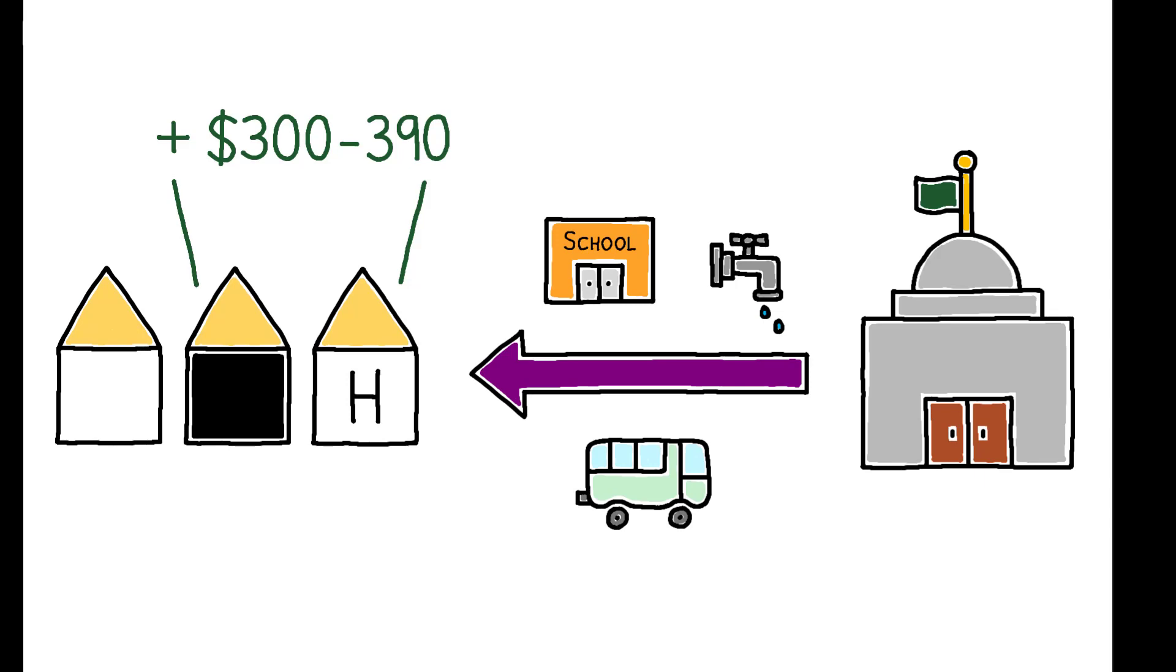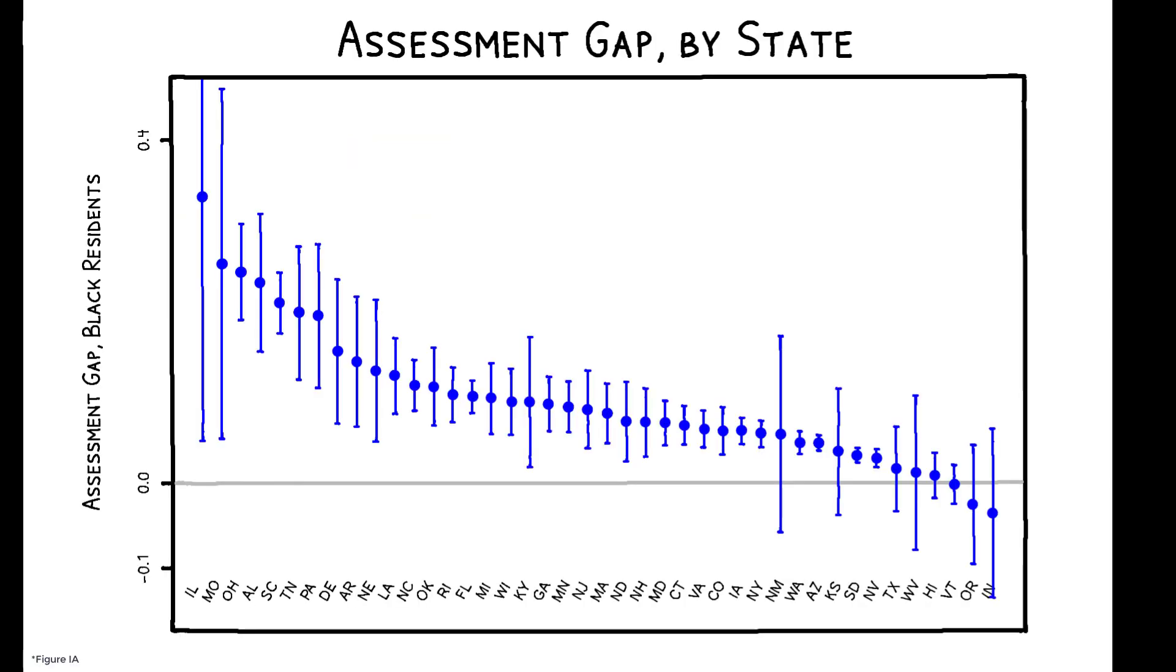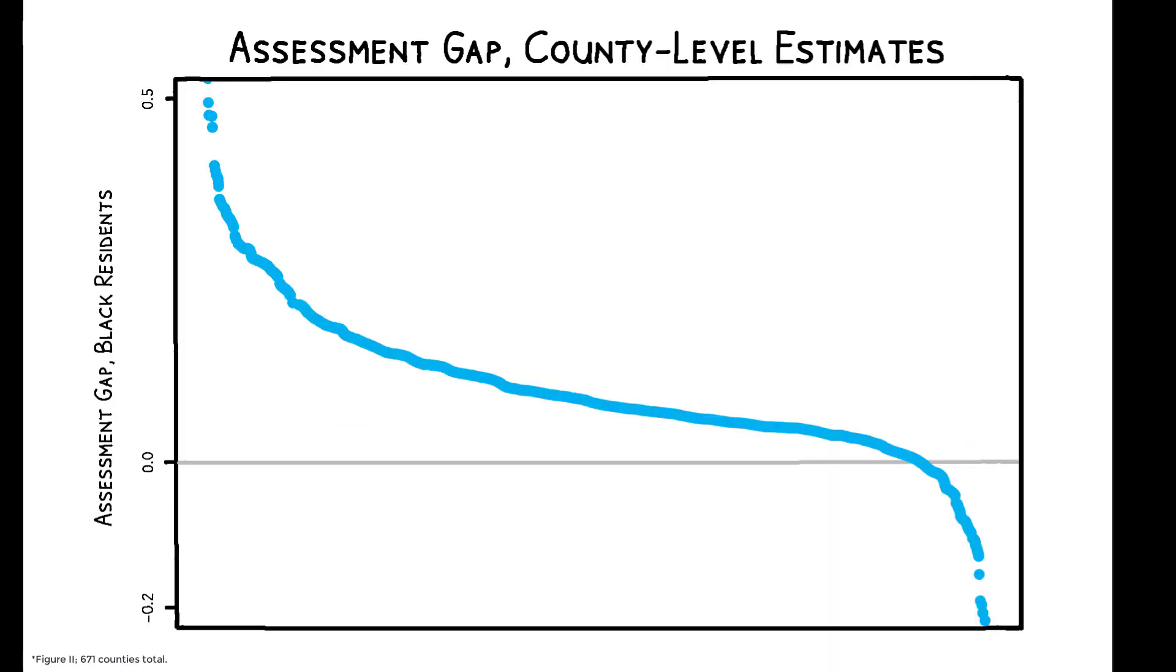Importantly, these findings are not driven by a few isolated cases. Assessment gaps are positive and strongly statistically significant in most states, and county-level estimates reveal that the average Black homeowner in a county at the 90th percentile of the assessment gap distribution pays an extra $790 annually in property tax.